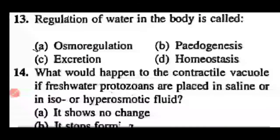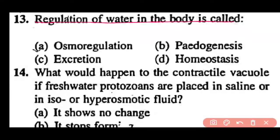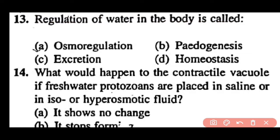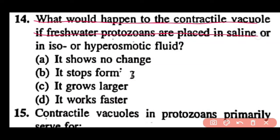Question 13: The regulation of water in the body is called osmoregulation, pedogenesis, excretion, or homeostasis? Correct answer is option A. Osmoregulation is the regulation of water in the body. Question 14: What would happen to the contractile vacuole if fresh water protozoans are placed in saline or iso/hyper-osmotic fluid? It shows no change, it stops forming, it grows larger, or it works faster? Correct answer is option B — it stops forming.